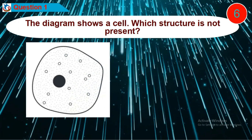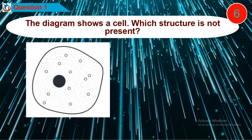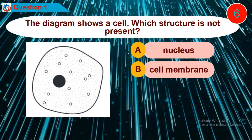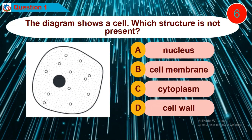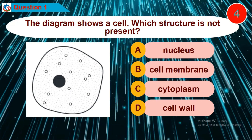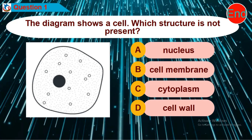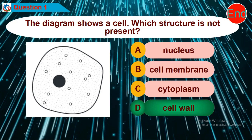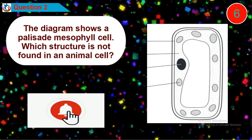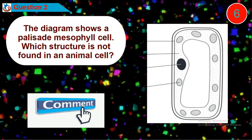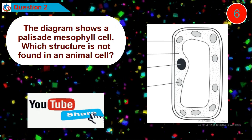Question 1: The diagram shows a cell. Which structure is not present? Is it option A, B, C, or D? Question 2: The diagram shows a palisade mesophyll cell. Which structure is not found in an animal cell? Is it option A, B, C, or D?